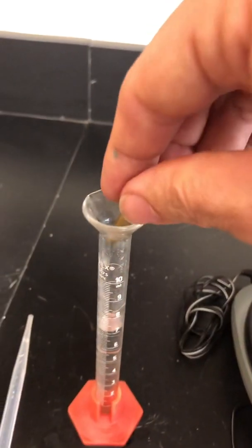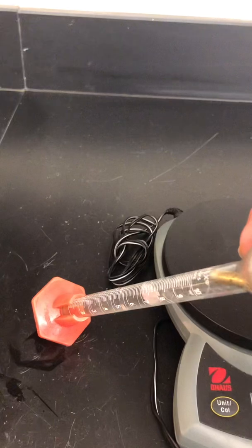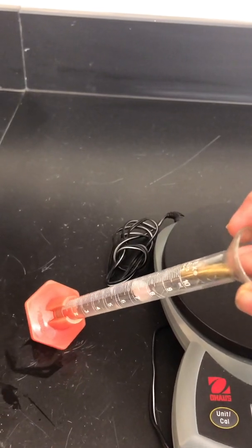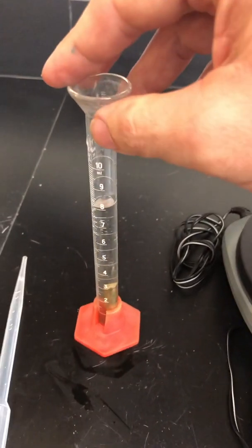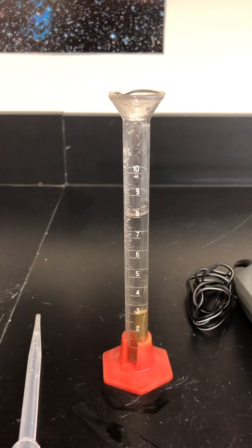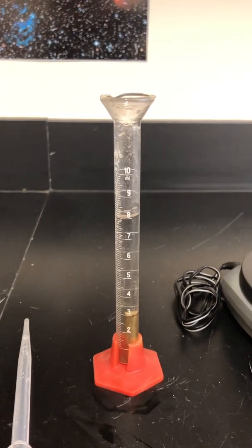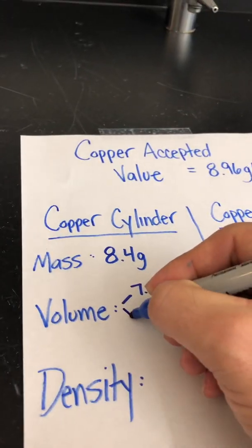What I'm going to do is I'm going to take my cylinder. I'm going to try to do this one-handed, try to slide that down without making too much of a splash. There we go. Not bad. Bring this down. And the bottom of the meniscus there, kind of hard to get an accurate reading with the phone, it's about 7.9 milliliters.